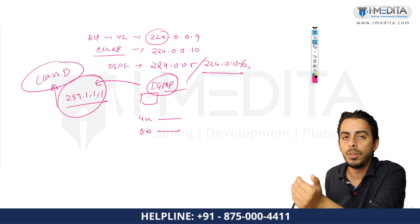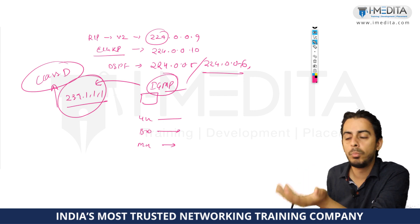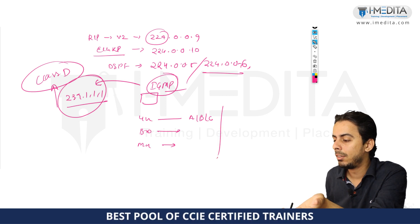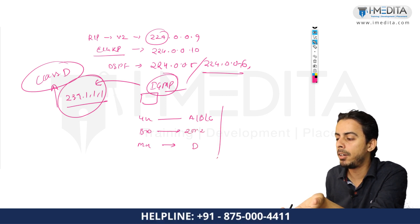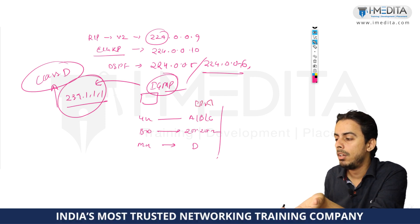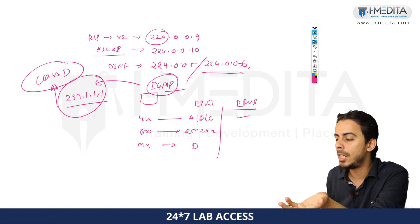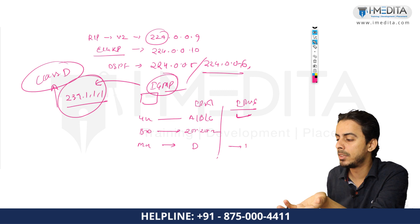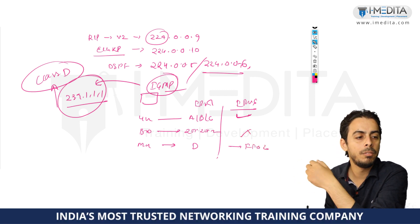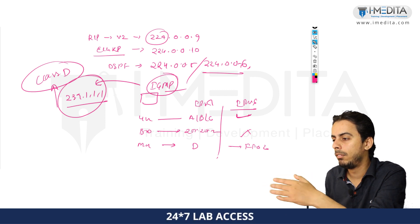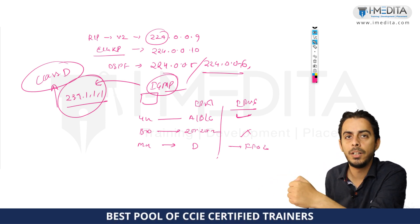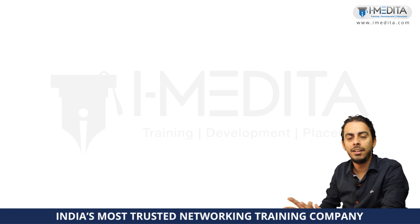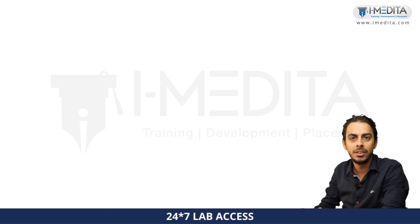In summary: unicast addressing is for one-to-one communication; broadcast addressing is for one-to-all communication; and multicast addressing is for one-to-a-group communication but not to all. In IPv4, Class A, B, and C are for unicast, Class D is for multicast, and 255.255.255.255 is the broadcast address. In IPv6, there are global unicast addresses, unique local IP addresses, and a multicast range — but no concept of broadcast. Thank you for watching; if you have any questions, let us know in the comments.